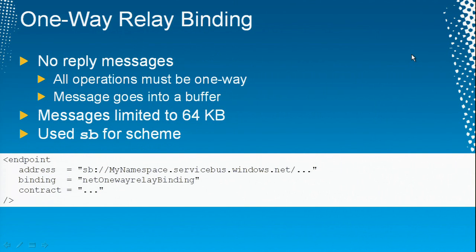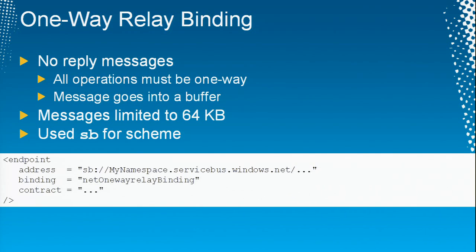The other binding is called the one-way relay binding. It doesn't have a direct use as is — I'm showing it because it's a stepping stone for something else. This one is meant like a one-way fire-and-forget message, but not really. What it means is no reply message comes from the service to the client. The client pushes a message to the relay service and returns; the relay service deposits it in the buffer, and from the buffer it goes to the service behind the scenes. The message size is limited here because if they buffer things, they have to cap message size to prevent buffer overflow attacks.